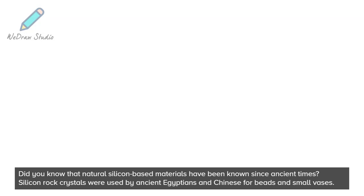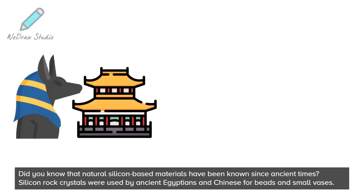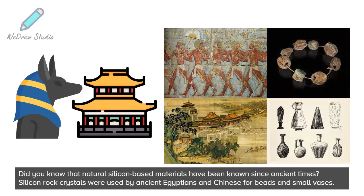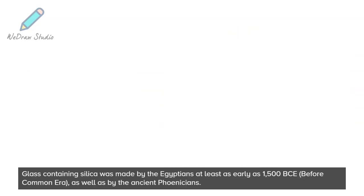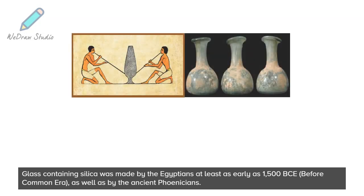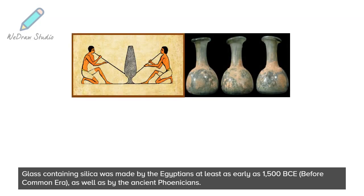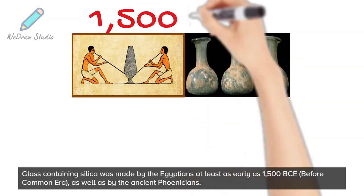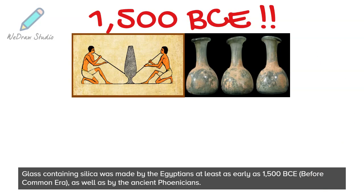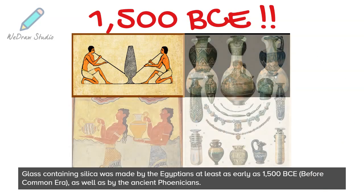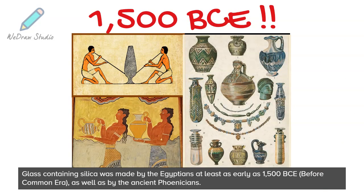Did you know that natural silicon-based materials have been known since ancient times? Silicon rock crystals were used by ancient Egyptians and Chinese for beads and small vases. Glass containing silica was made by the Egyptians at least as early as 1500 BCE, before Common Era, as well as by the ancient Phoenicians.